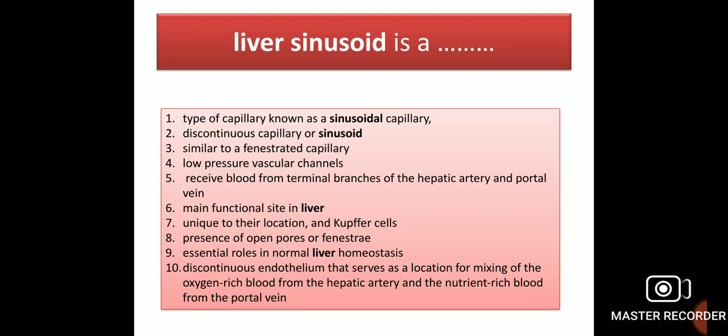Liver sinusoid is a type of capillary known as a sinusoidal capillary. It is a discontinuous capillary, also called a sinusoid, similar to a fenestrated capillary. These are low pressure vascular channels which receive blood from terminal branches of the hepatic artery and portal vein. They are the main functional site in the liver, unique to their location, with Kupffer cells, open pores or fenestrae, and an essential role in normal liver homeostasis.